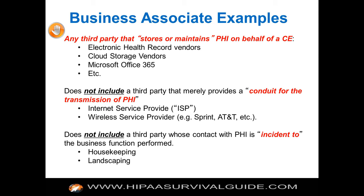Your wireless service provider is not a BA. FedEx and UPS are not. They're considered conduits — HHS has issued guidance on that — and they don't need to regularly access PHI. They're essentially providing a pipe for the transmission of PHI. It also does not include third parties whose contact with PHI is incidental to the business function, such as housekeeping or landscaping.